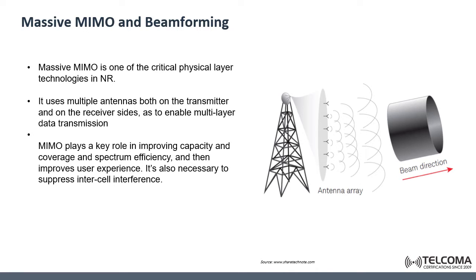In practice, massive means there are 32 or more logical antenna ports at the base station. If you are using more than 32 antenna ports, you are using the massive MIMO concept. Common 5G massive MIMO antenna configurations include 64, 96, 128, and even 256 antenna systems.